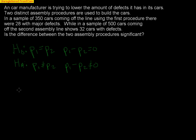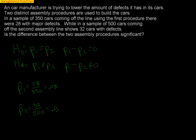In the first sample, we saw 28 out of 350 cars with defects — that's a proportion of 0.08, or 8%. From the second sample, using the second assembly procedure, we saw 32 out of 500 defective cars, which is 0.064, or 6.4%.